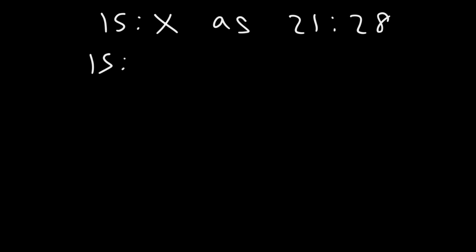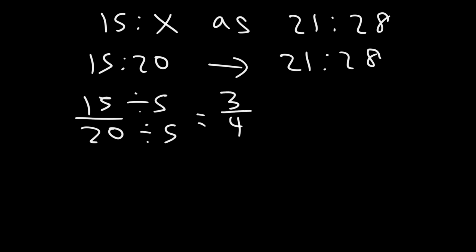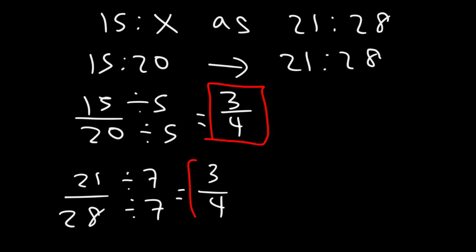So 15 to 20 is the same ratio as 21 to 28. Now, let's check the work by simplifying the ratios. So this is 15 over 20, and if we divide both numbers by 5, this will reduce to 3 divided by 4. For the other fraction, we could divide both numbers by 7, and so this is going to be the same thing, 3 over 4. So the two ratios are equivalent when x is 20.